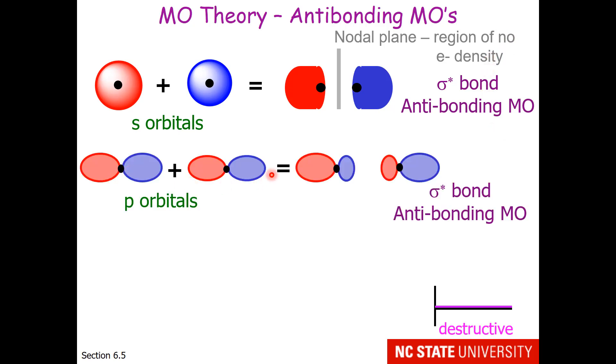If p orbitals met such that the two coming together were of 180 degrees difference in phase, once again, you would get cancellation in the middle. So although there's a tiny bit of shielding, the nuclei would still have a very good look at one another. This is another anti-bonding MO, and it has a nodal plane between the nuclei. So instead of being called sigma bonds, these are called sigma star bonds to indicate that they are at higher energy and anti-bonding MOs. That means they don't help with the bonding.